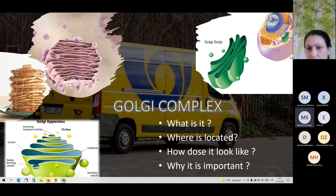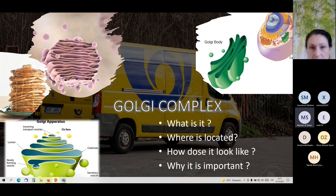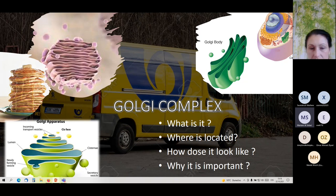The Golgi Complex is important because it's like a post office — you can see the picture of the post office car, because it has the same job. The Golgi receives proteins, repackages them, and sends them out by vesicles. You can see in the picture the green circles — these are the vesicles. So that was the main information and a small presentation. Thanks for your attention.